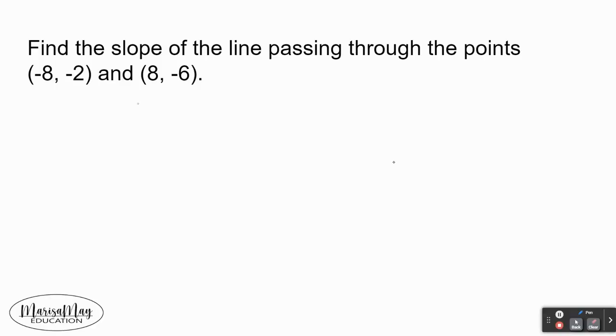In this video we're going to find the slope of the line passing through the points (-8, -2) and (8, -6). Now we're going to use the formula y2 minus y1 over x2 minus x1.